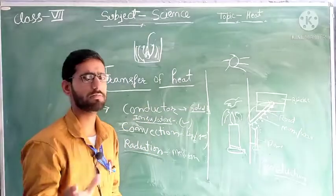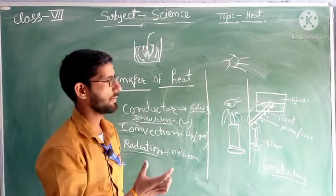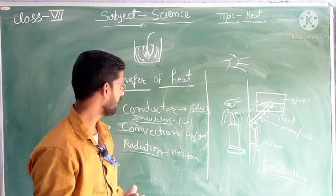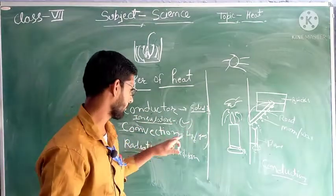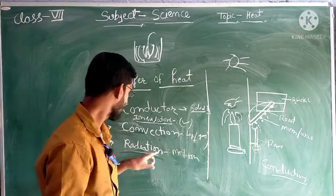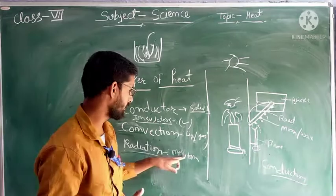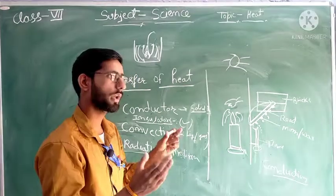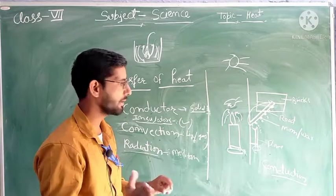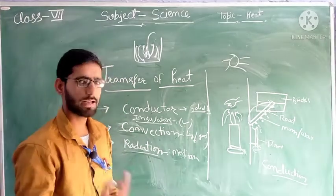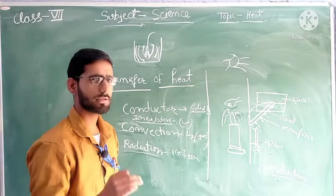After this, we will discuss sea breeze and land breeze. In this lecture, we discussed three things: conductor is in solid form, convection is in liquid and gases form, and radiation has no matter of medium. The most suitable example is sunlight, which has no medium. In the next lecture, we will discuss sea breeze and land breeze.